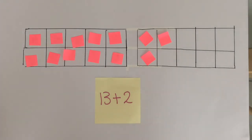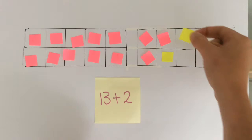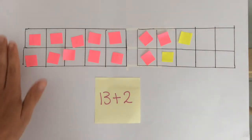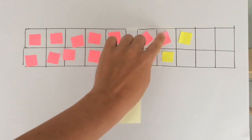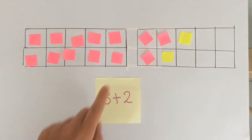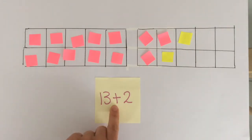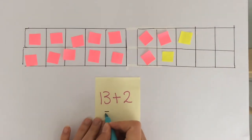So now we need to add on two more. So I'm going to pick a different colour now to count my second quantity. 1, 2. So all together we have 10, 11, 12, 13, 14, 15. So 13 add 2 is 15. Let's write the answer.